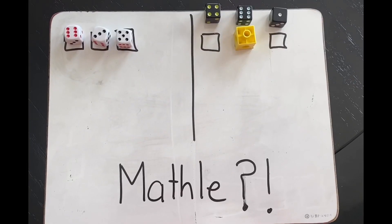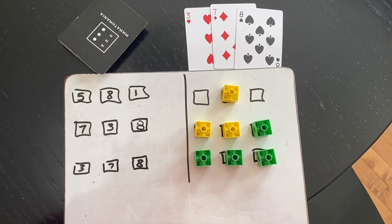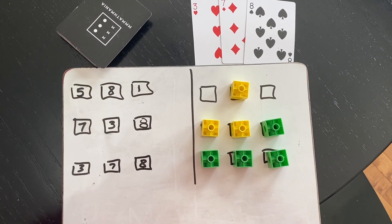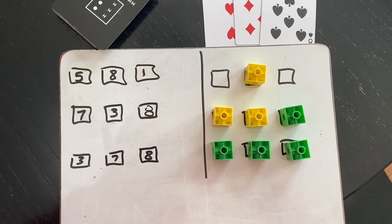There you have it — another game you can play with your students or children at home. We don't quite have a name for it yet, but since it's based on Wordle, why don't we call it Mathle? We'll workshop that name. One way to modify the game is by using more dice, dice from one to nine, or if you don't have dice you can always use cards — and if using cards, have students write down guesses on a whiteboard. If you find a different way to modify it, let us know in the comments below. Thanks for joining us!